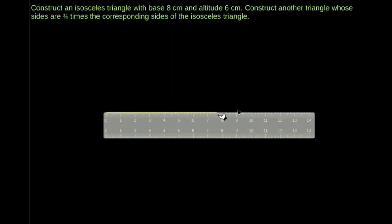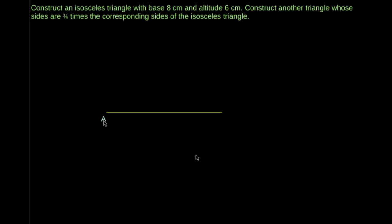Draw a line segment AB equal to 8 cm. Now, draw a perpendicular bisector to the line segment AB.